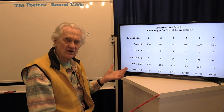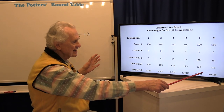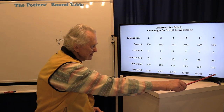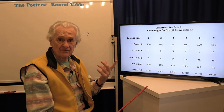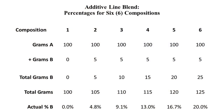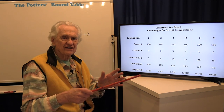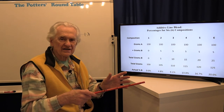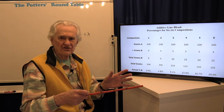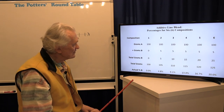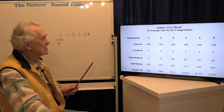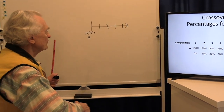The additive blend is nice because I only need to make one batch and can get a lot of samples out of it. If I find a range of compositions I really like — whether for color, firing temperature, or another property — I can go back and do more detailed testing to nail down the percentages precisely. That more precise approach would be what's called a crossover line blend.